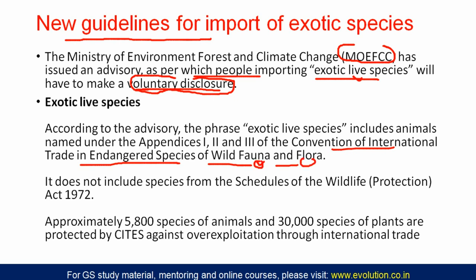CITES deals with the Convention on International Trade in Endangered Species of Wild Fauna and Flora — both plants and animals are included. If you are importing an exotic species of plant or animal permitted by CITES and present in Appendix I, II, or III of the CITES listing, you have to do the voluntary disclosure. This is about import and export, relating to CITES schedules, not to the Wildlife Protection Act 1972 schedules.